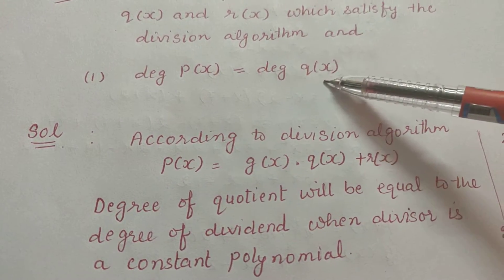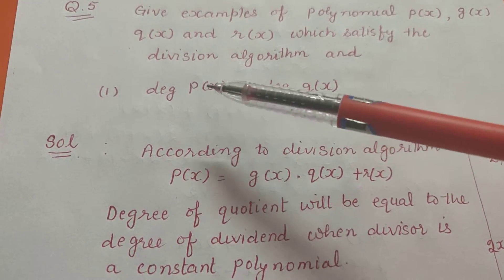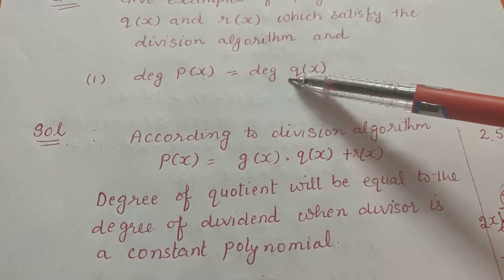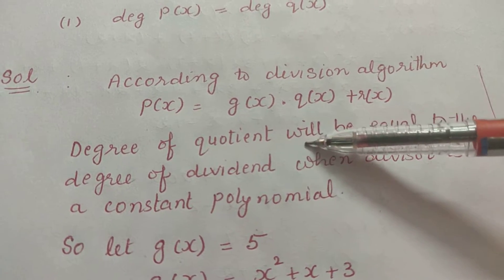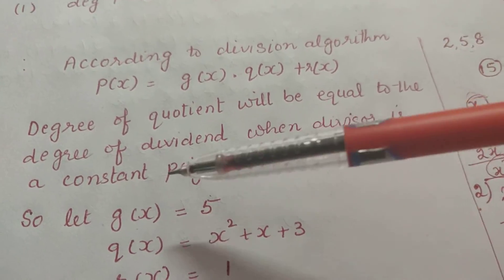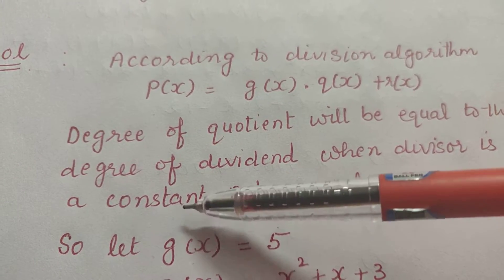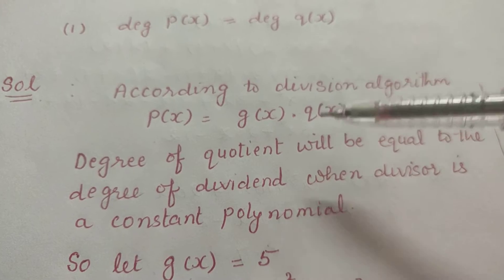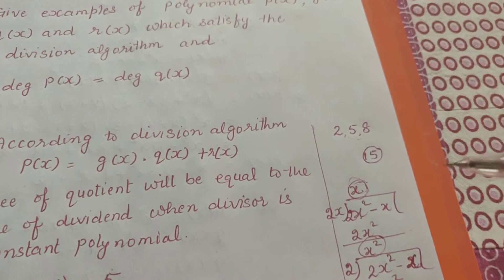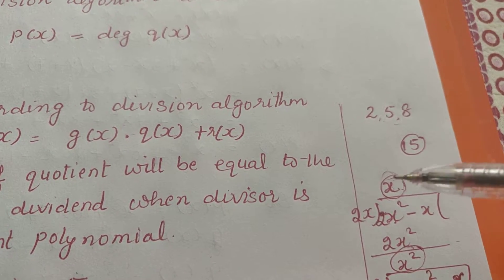p(x) is the dividend and q(x) is the quotient. When does the degree of the quotient equal the degree of the dividend? This only happens when the divisor is a constant polynomial. Constant polynomials are polynomials like 2, 3, or 5 — they have no variable term.